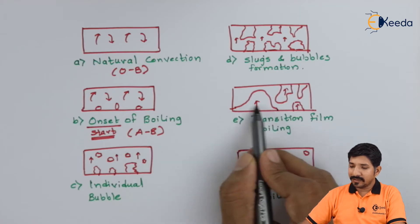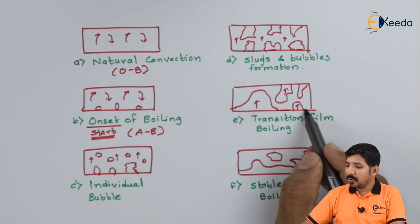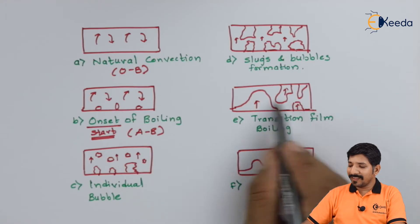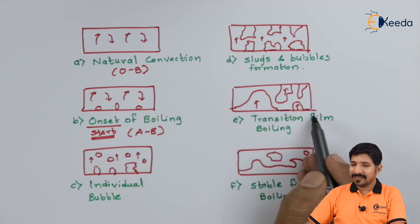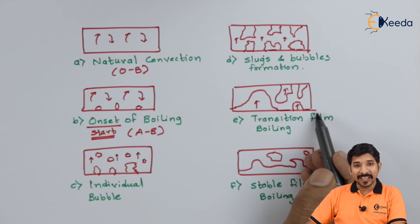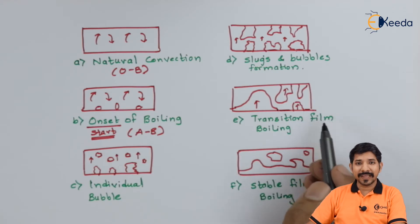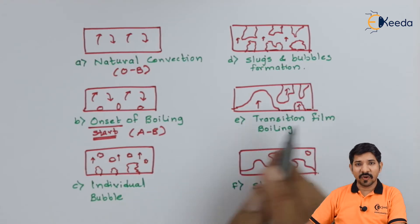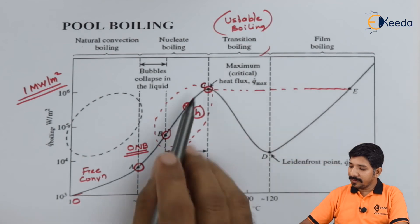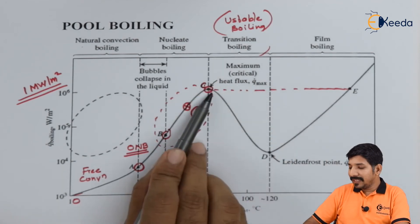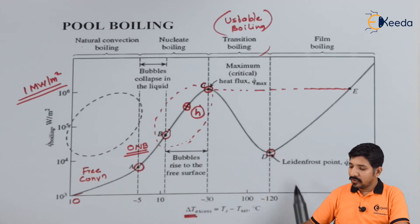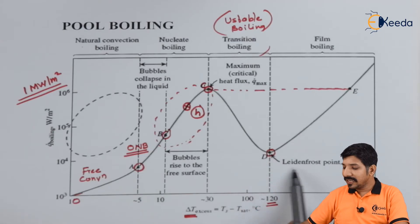This part is transition film boiling wherein there is no complete film formed — only partial film forms in some areas and not others. Because of this, the heat transfer rate suddenly drops. Even if I increase ΔT, the value of the heat transfer coefficient drops due to the reduced surface contact. This is the transition boiling region, and the heat transfer rate drops until a point D, which comes around 120 degrees Celsius.